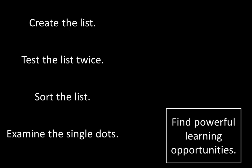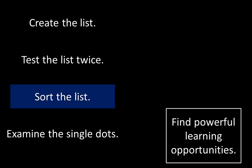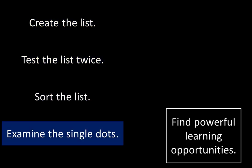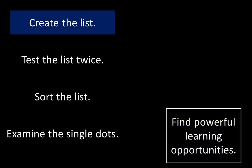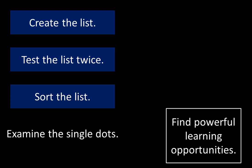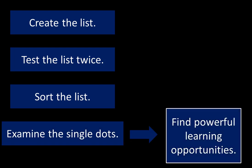In the last videos, we learned that there are five steps of list activities. The steps are: create the list, test the list twice, sort the list, and examine the single dots in order to find powerful learning opportunities. We've already created the list, tested the list twice, and sorted the list. That brings us to steps four and five, which go together: examine the single dots in order to find powerful learning opportunities.